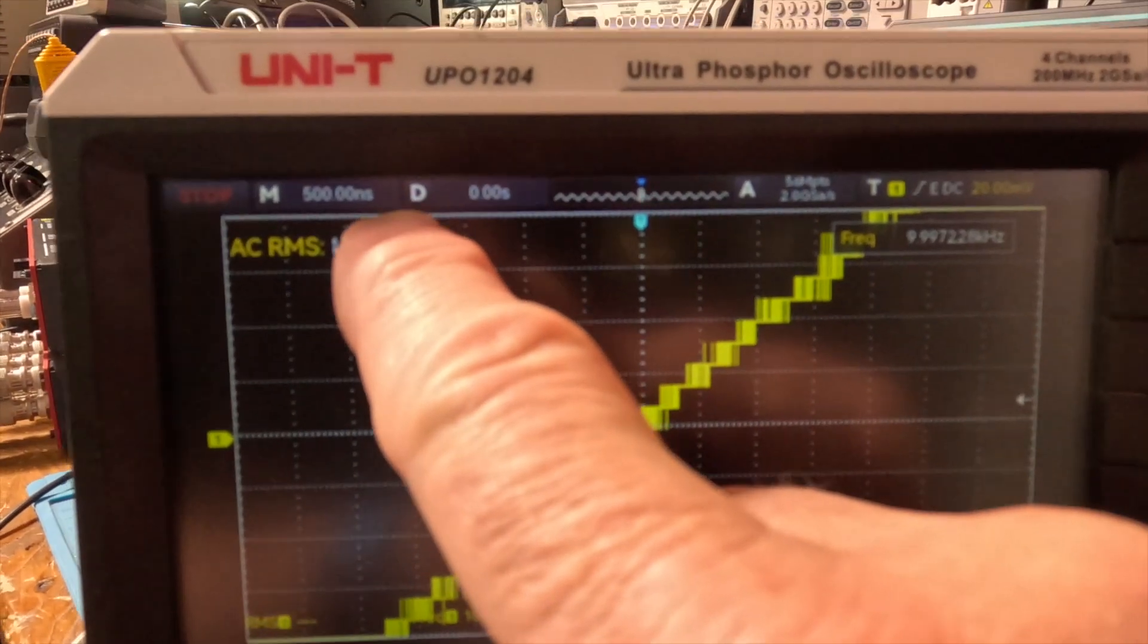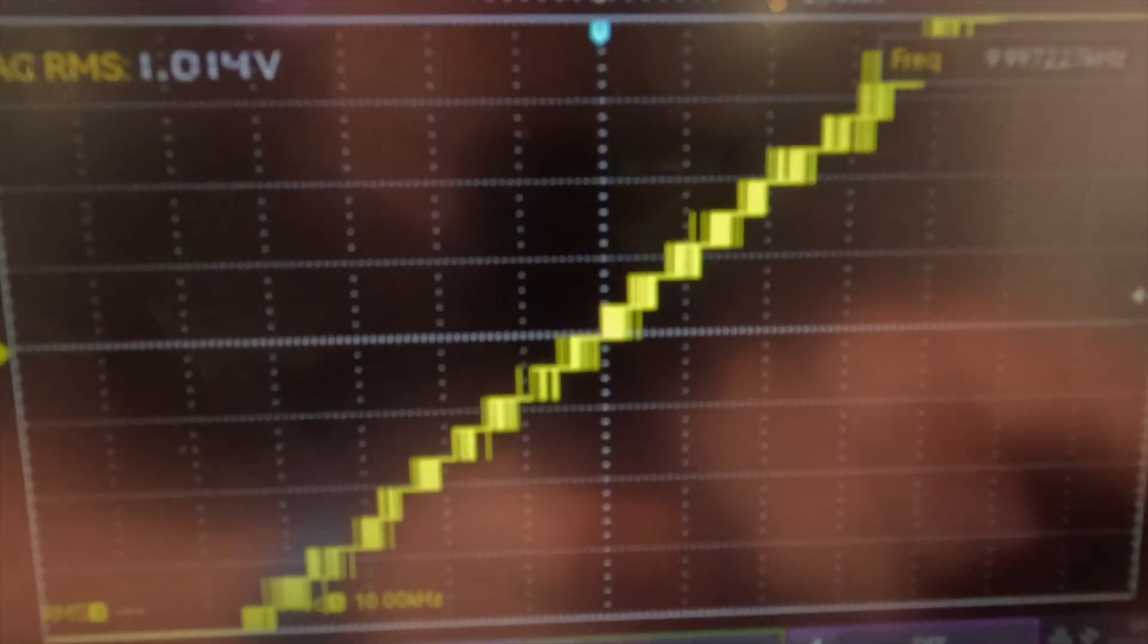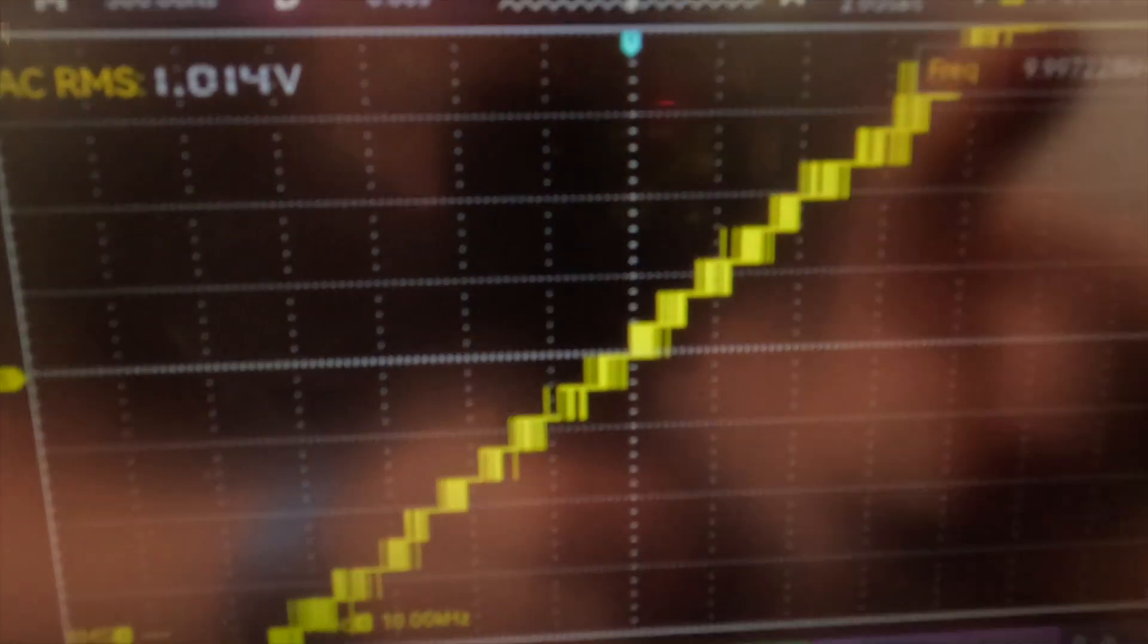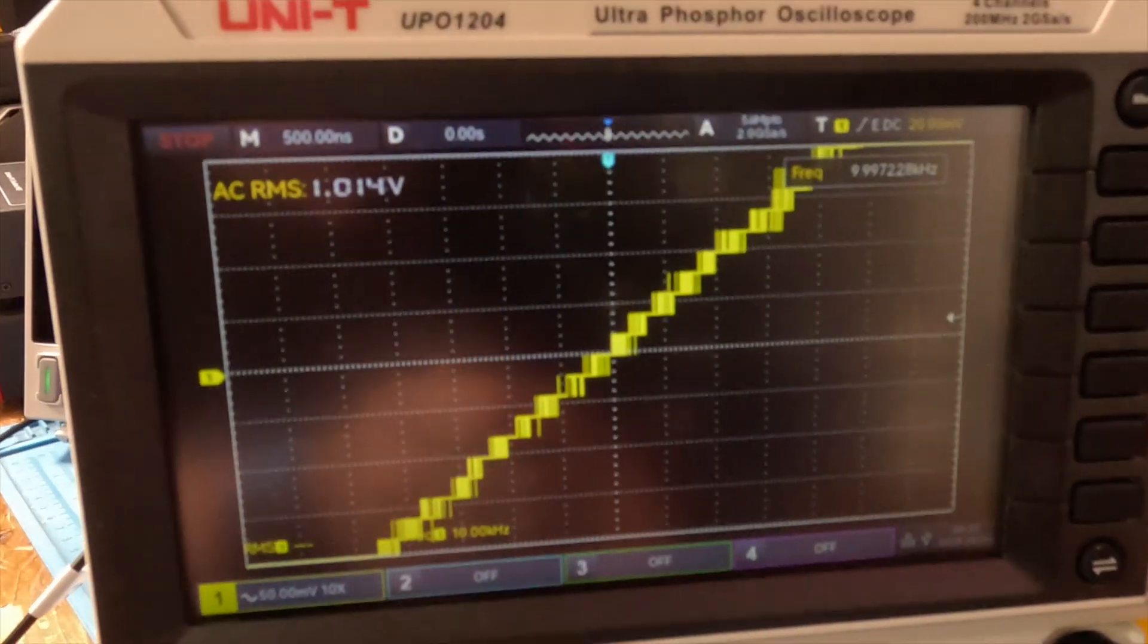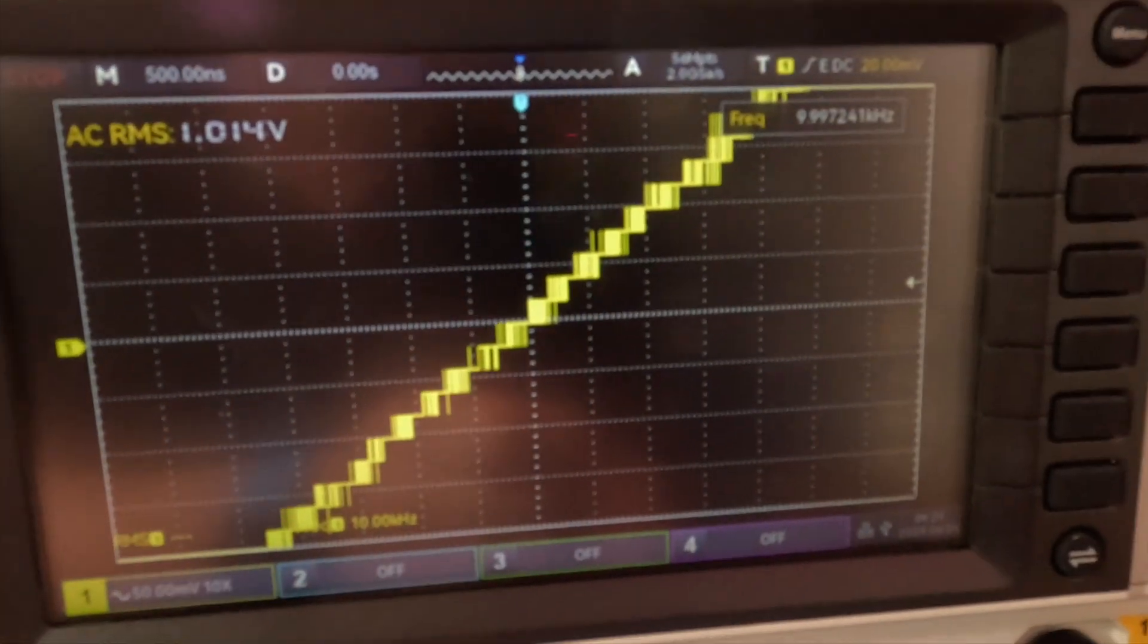Okay, and then 500 microseconds per division and look, there we go, there's that stair-steppy looking thing. It's pretty thick, it's filling up a grid almost. So same thing as the 200 meg GW Instek above.